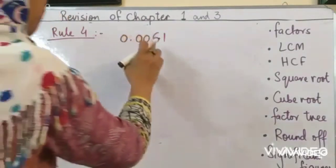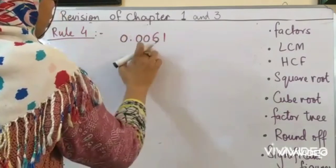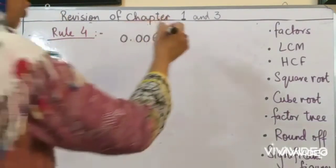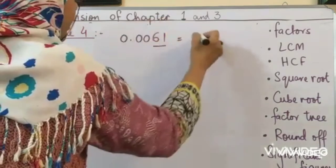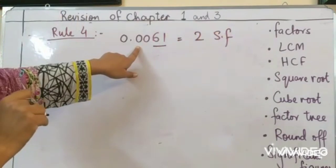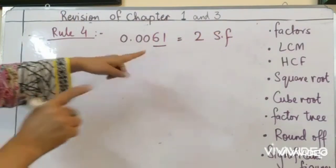0.0061. Now, before a non-zero digit, if you have zeros, they are not significant. So only two are the significant figures for this example. Clear? Clear?